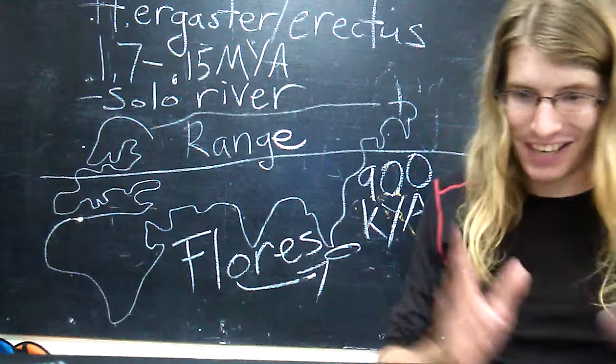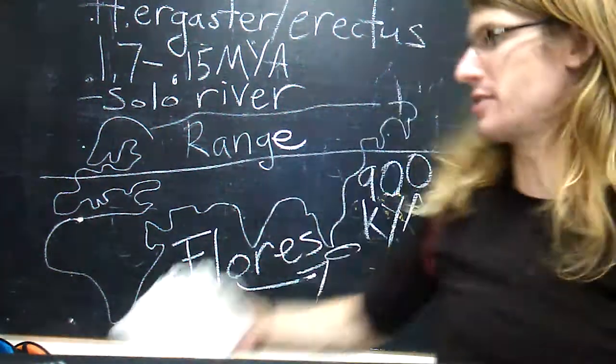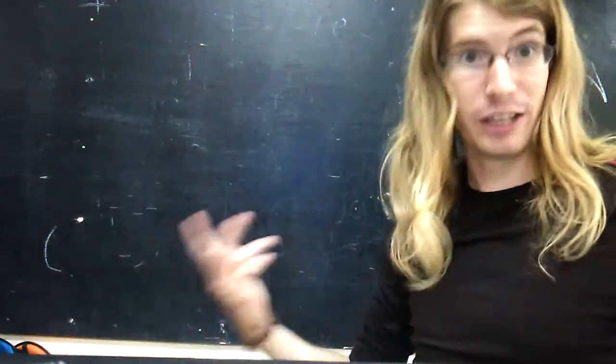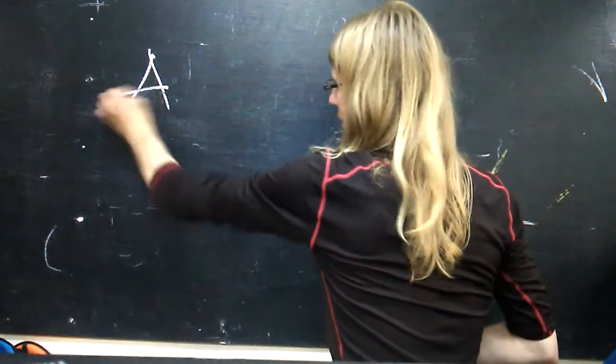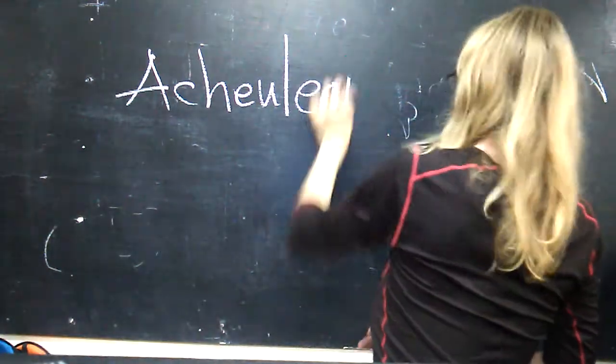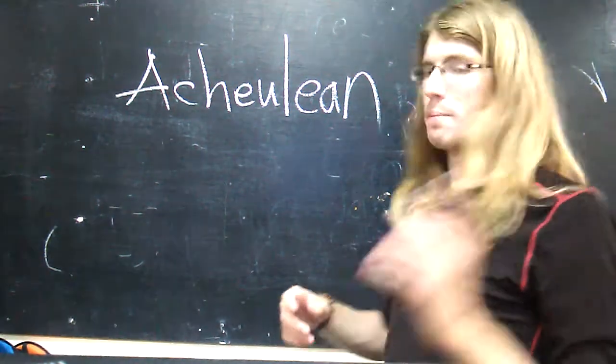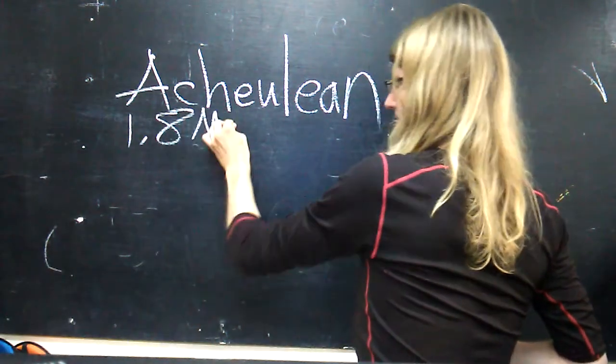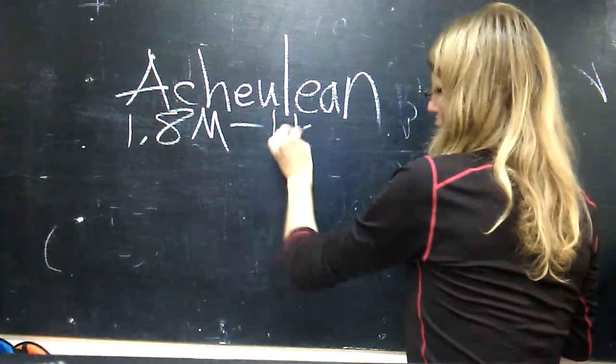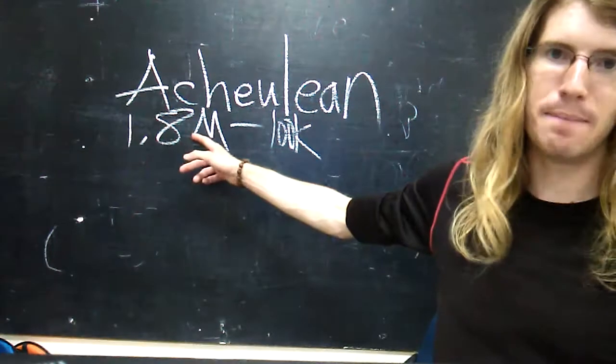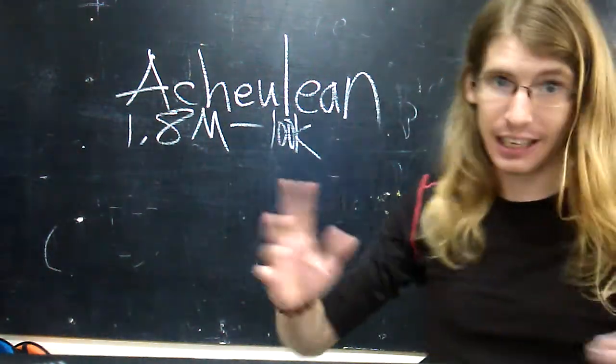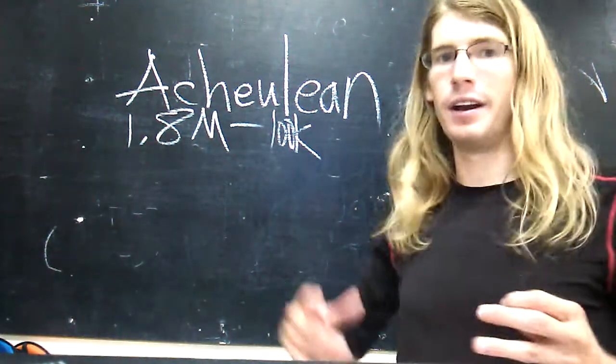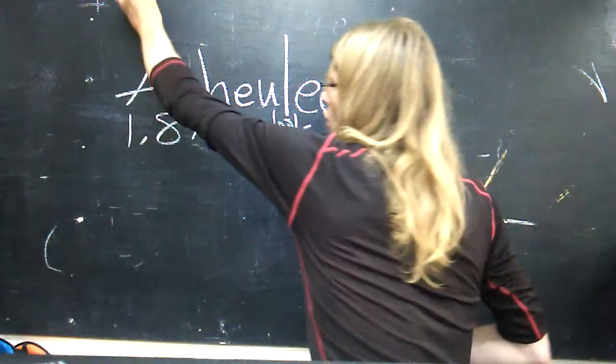As far as the ergaster and erectus toolkit is concerned, the ergaster and erectus toolkit is marked by a particular archaeological industry that we refer to as the Acheulean. The Acheulean industry matches up pretty well with the erectus timeline from 1.8 million years ago to about 100,000 years ago. The Acheulean industry is preceded by the one more associated with Homo habilis, that is the Oldowan industry.